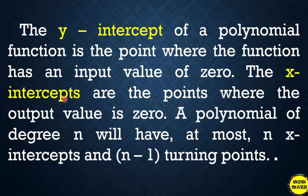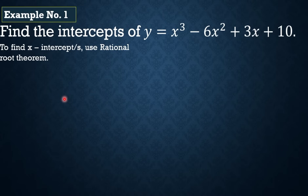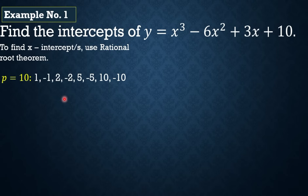Since ang focus natin sa video lesson na ito ay kung paano lang kunin yung x and y-intercept given the polynomial functions — first, find the intercepts of y = x³ - 6x² + 3x + 10. Dito sa example number 1, i-apply natin yung rational root theorem na natutunan ninyo sa first quarter para makuha natin yung x-intercept. Babalikan lang natin paano nga ulit ina-apply yung rational root theorem.